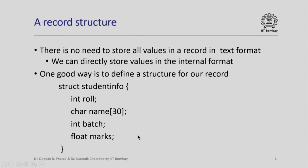In this particular session, we are merely going to create a binary file amenable for direct access. To begin with, we define a record structure so that we can collect all different attributes of a record in one place and refer to all of them by a single name. We also note that there is no need to store all values in text format in the output file; we can use internal format to directly store values.